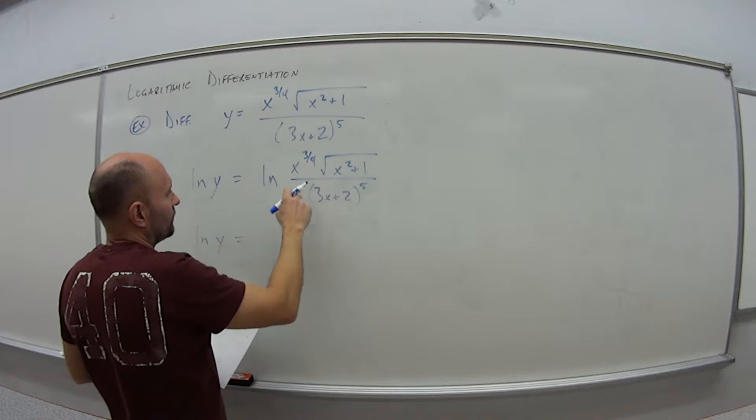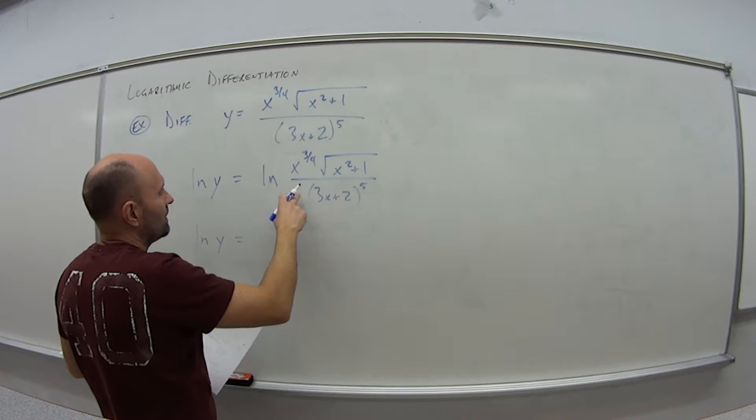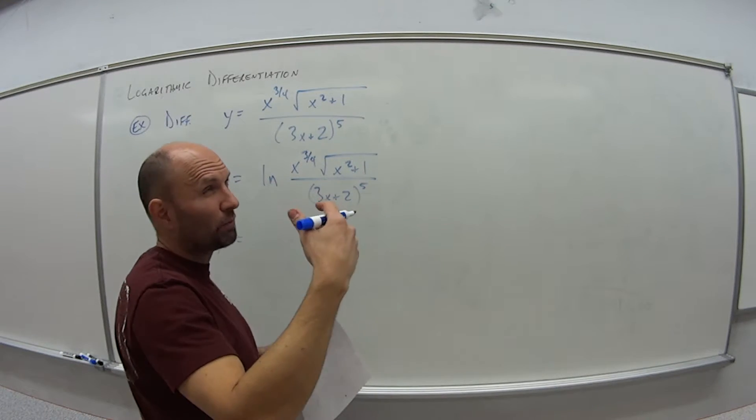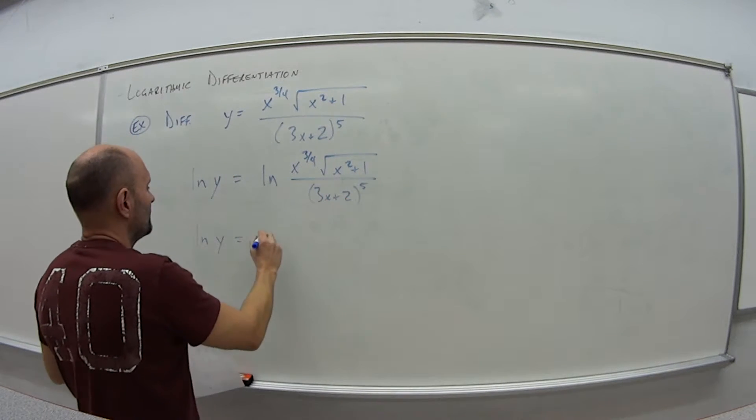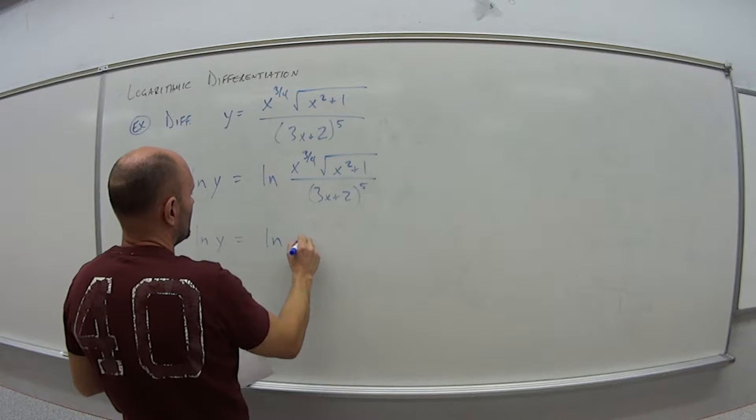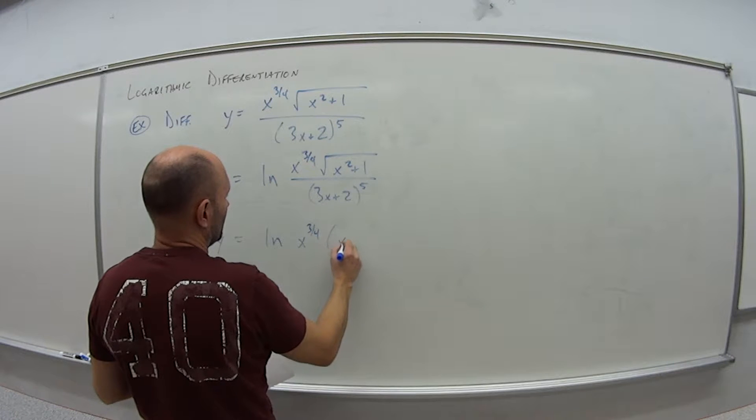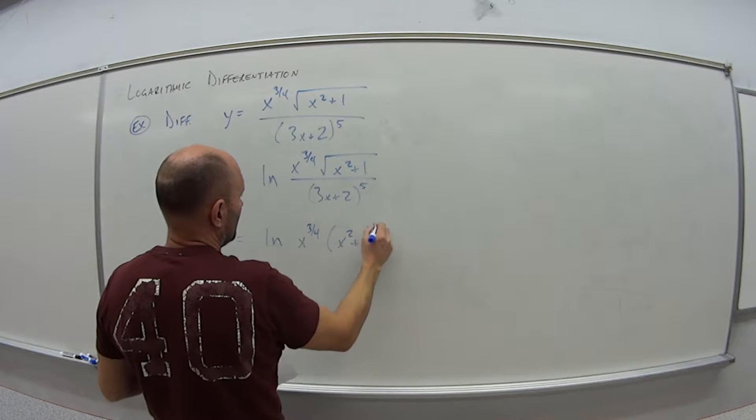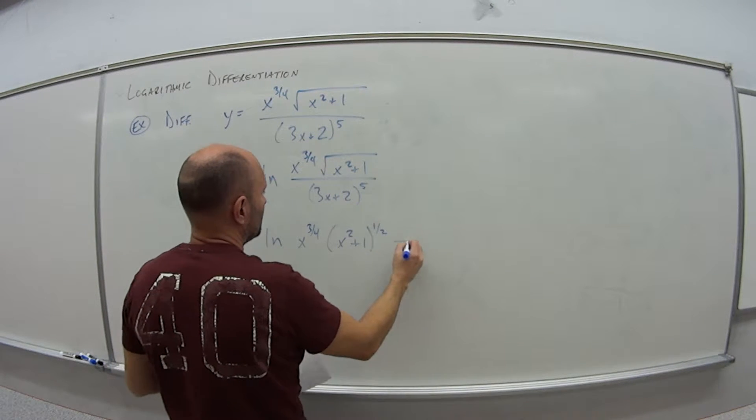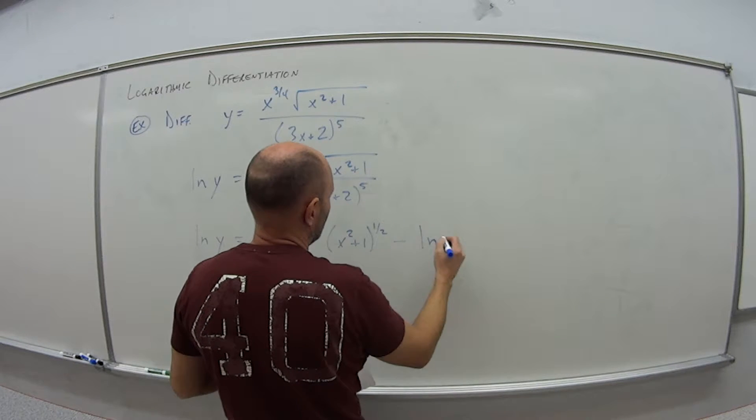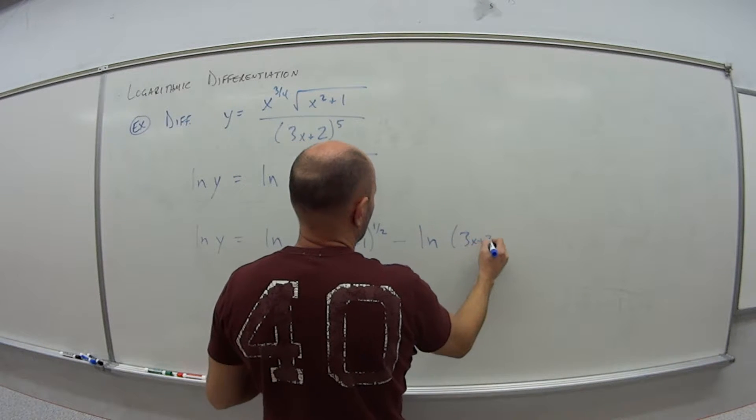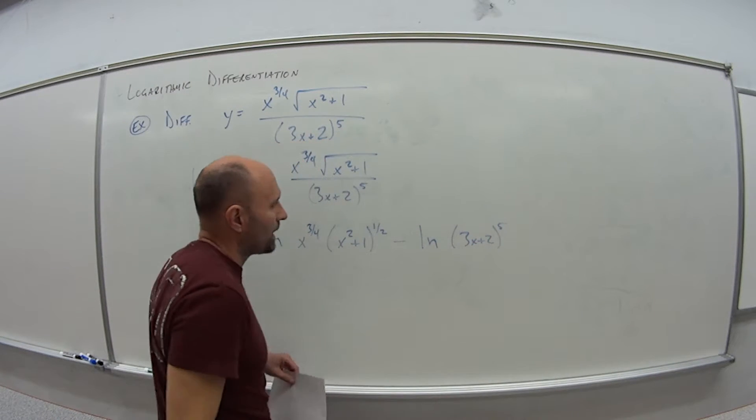First thing is this is a quotient, right? So that's my law of logs number two. So I can break this up as natural log x to the 3/4 times, I'm going to change this now to exponents here, x squared plus 1 to the 1/2 minus natural log of this, 3x plus 2 all to the fifth power.